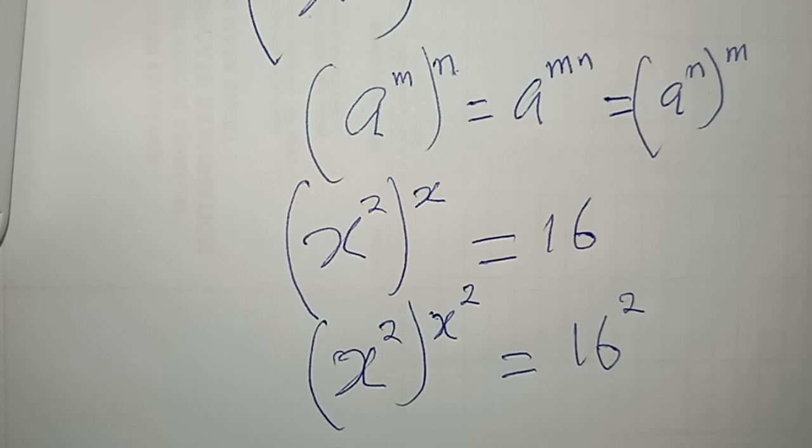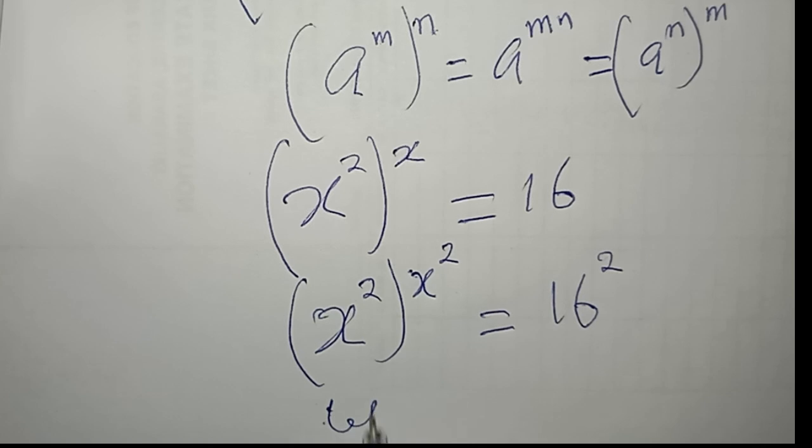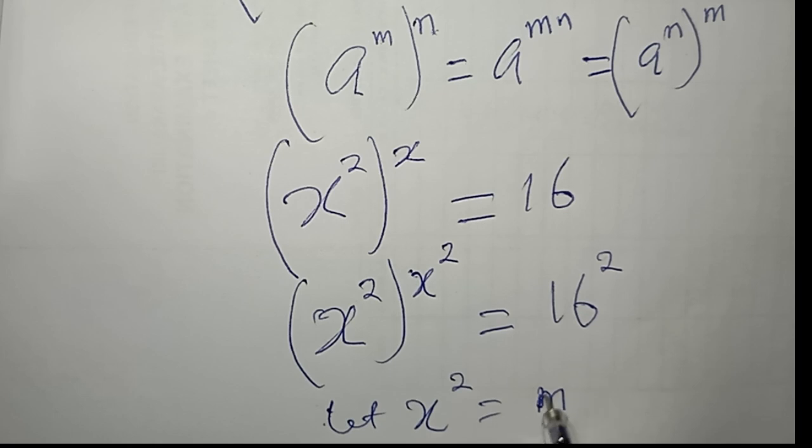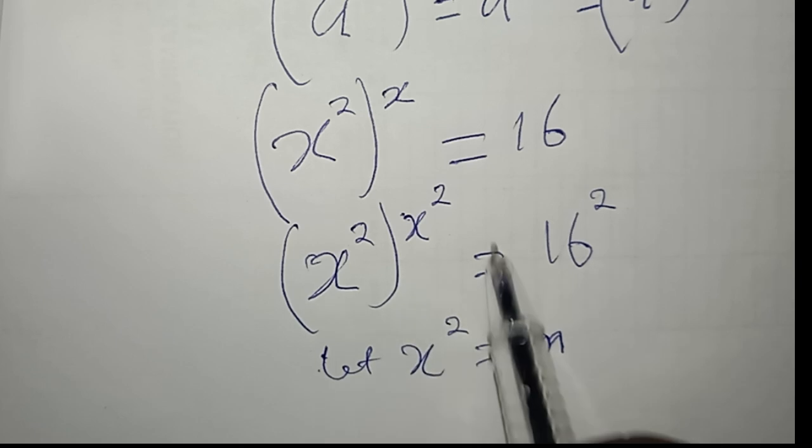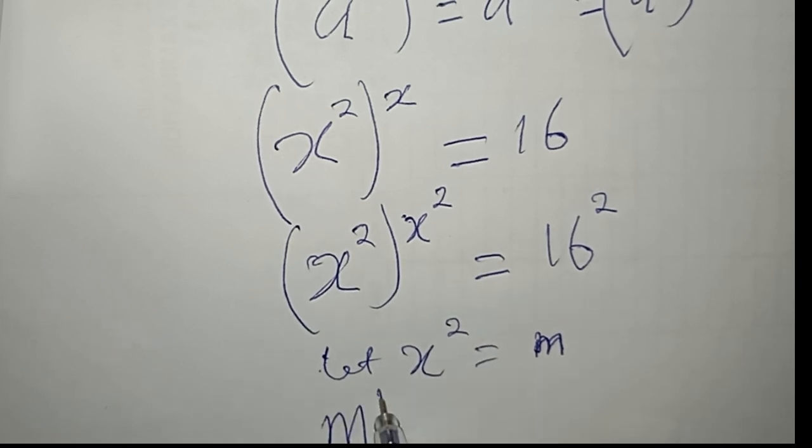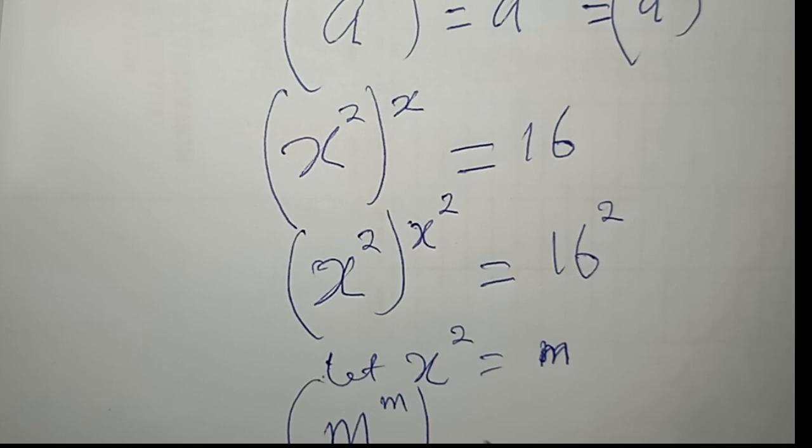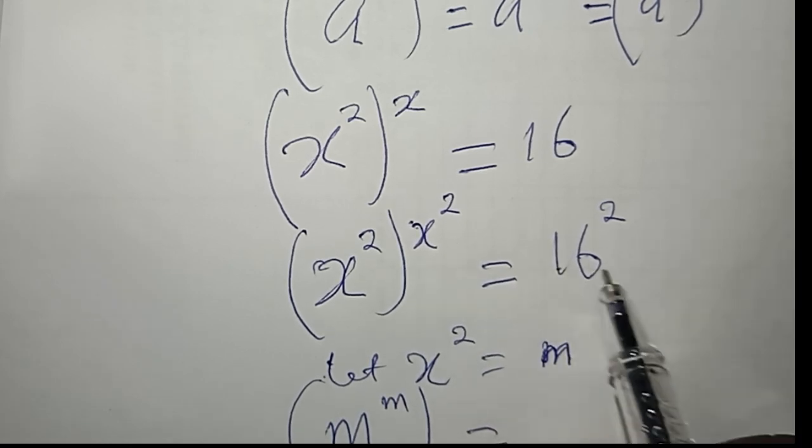So I am going to be making some substitutions so that this reduces. If I do that, I can say let x^2 = m. So if I substitute, I now have m^m = 16.